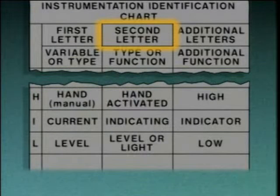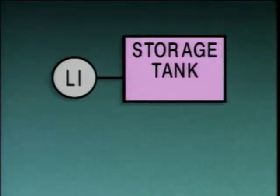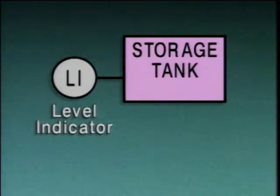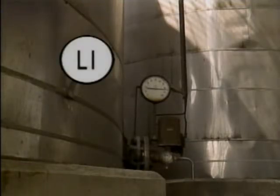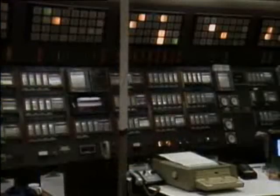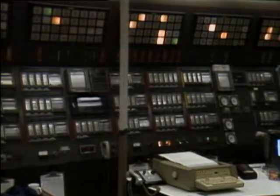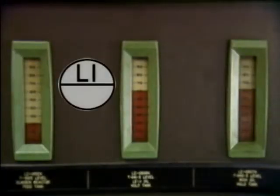The second letter in an instrument symbol usually indicates the type of instrument or its function. The second letter in this symbol is I. So this symbol represents a level indicator. Instruments that are located near a piece of equipment, like the level indicator for this tank, are referred to as local instruments. They're represented by a circle and letters. Remote instruments, which are typically mounted on a panel with other instruments in a control room, are typically identified by a line through the symbol, like the one here.